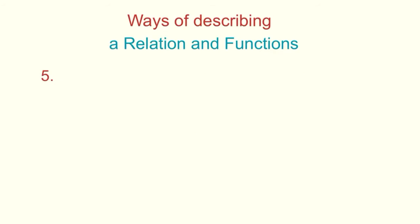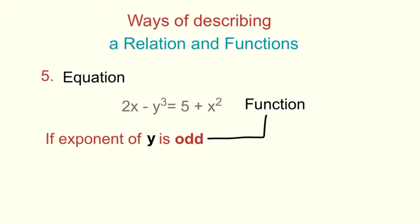For our example for the equation, the first example is 2x minus y raised to 3 equals 5 plus x squared. It is a function because as you can see, the exponent of y is odd.